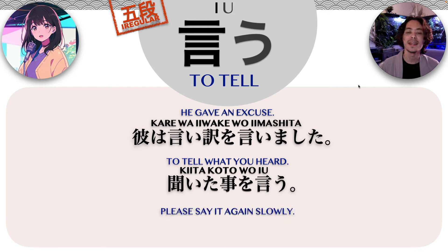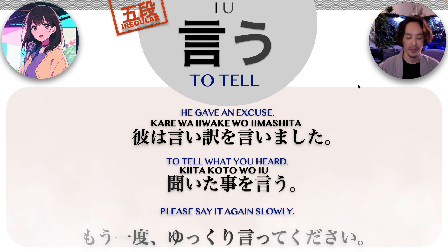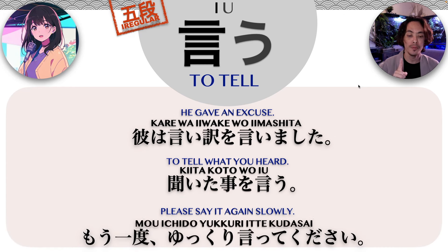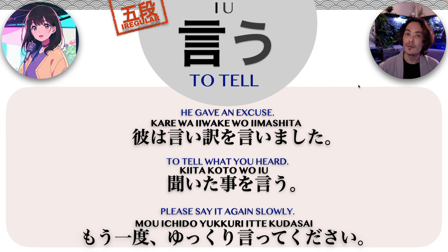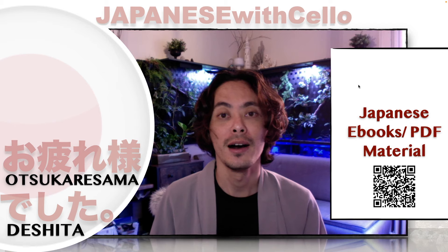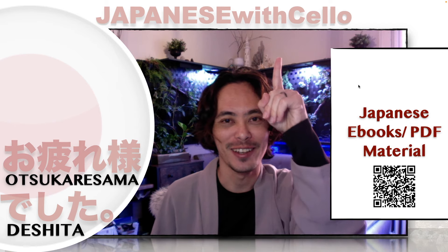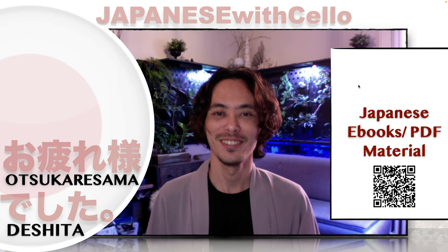How would you say 'please say it again slowly'? You could say: mou ichido yukkuri itte kudasai. Mou ichido means one more time, once again. Yukkuri means slowly. And itte kudasai means please say, please tell. So: mou ichido yukkuri itte kudasai. And that's it for this lesson! Otsukaresamadeshita. I hope you enjoyed this lesson. If you haven't seen the last verb hanasu, which is a little bit similar to the verb to tell, check out this lesson right here. I'll leave the card so you can check it out. Ja, mata. Bye-bye.